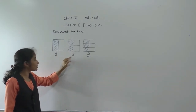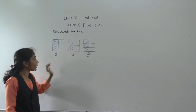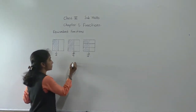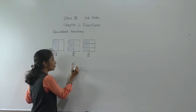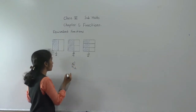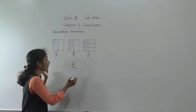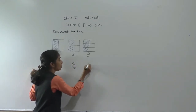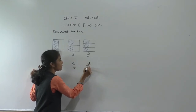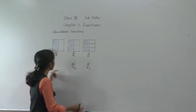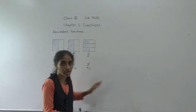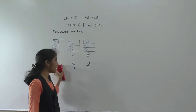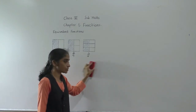If you reduce these fractions to their simplest form, you get the same answer. Two upon four: two ones are two, two twos are four — you get half. Three upon six: three ones are three, three twos are six — again you get half. So all these fractions are equivalent fractions.